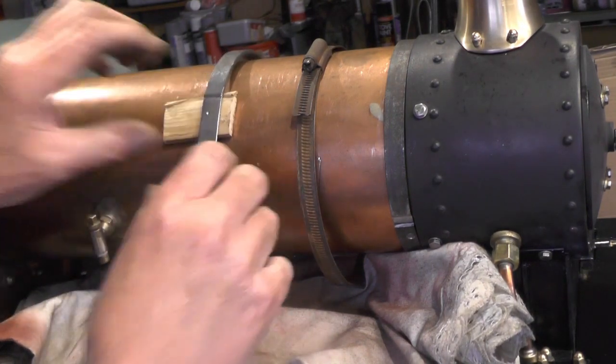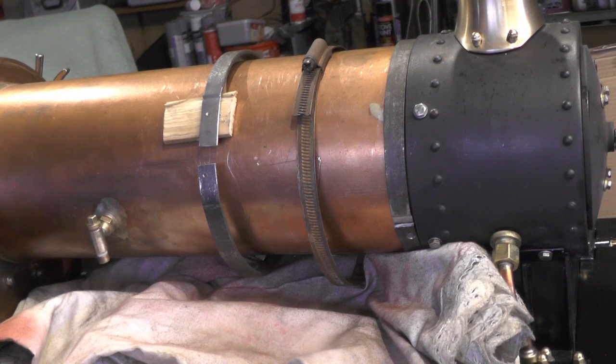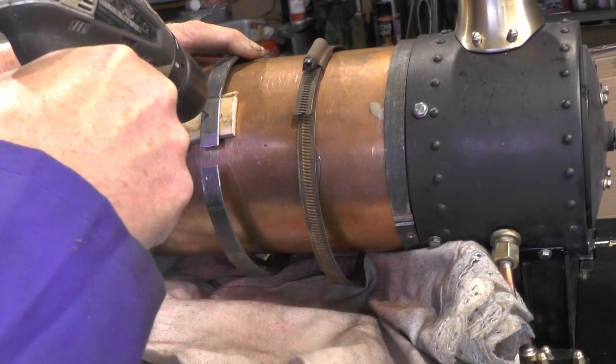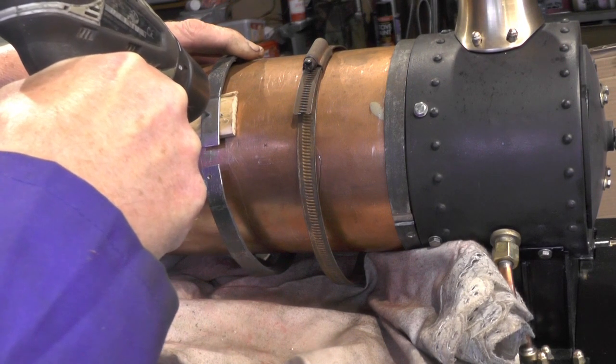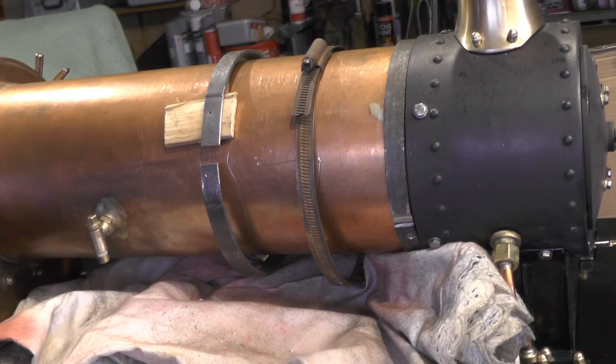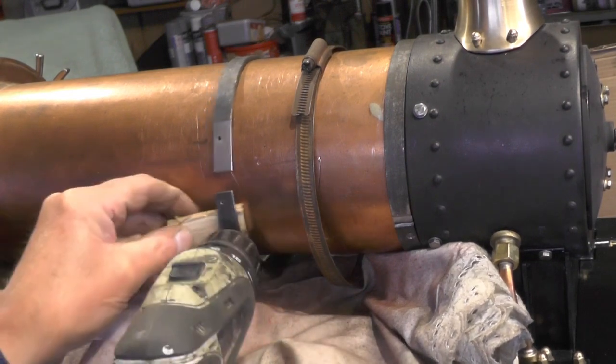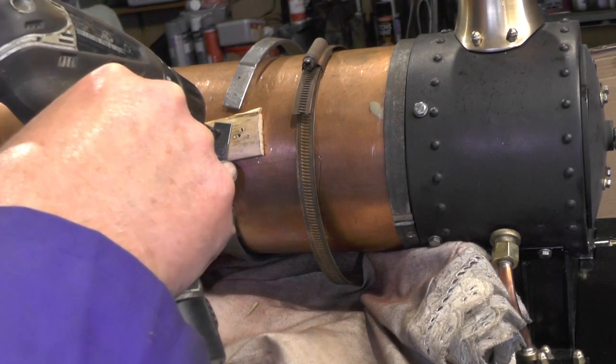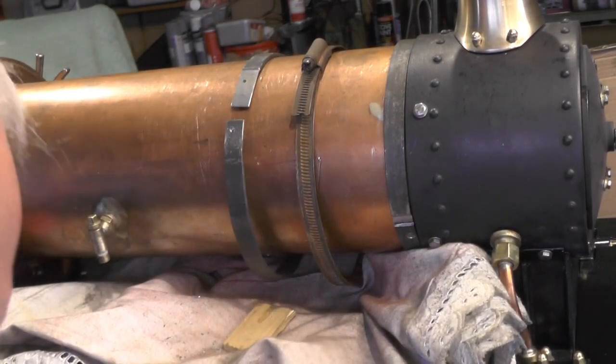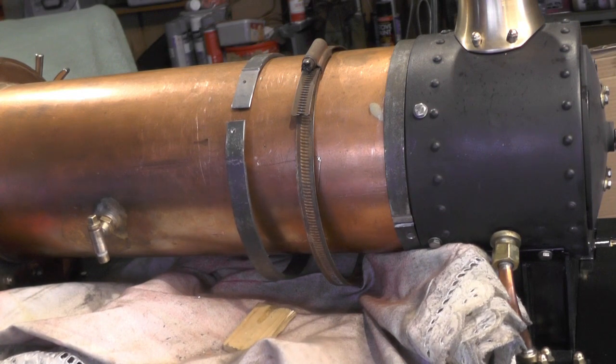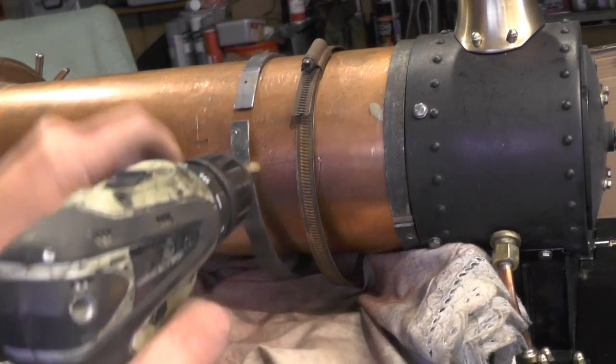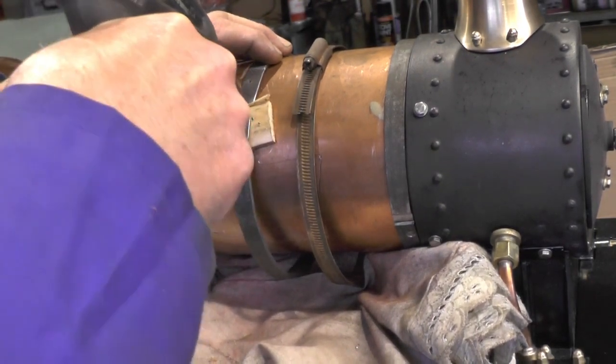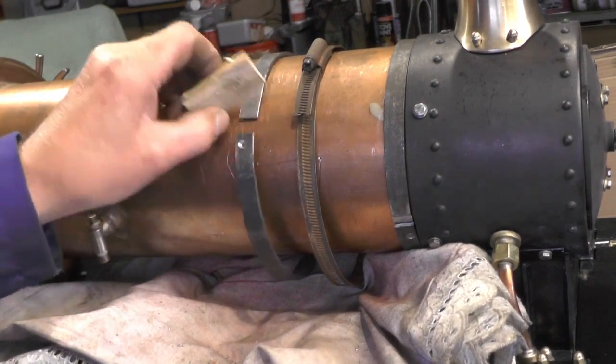So I've marked my hole for my screw, I'm going to tap that 6BA now. I've also got to put a clearance hole on the other side and countersink it so that everything's flush when it's screwed together. Now I've just got to tap that hole 6BA.